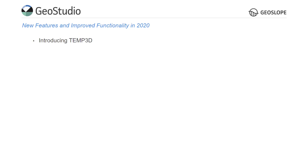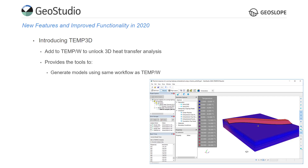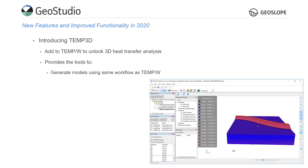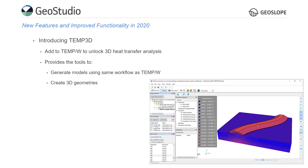3D temperature modeling is now available in GeoStudio. Add Temp3D to your existing TempW license to unlock the power of 3D heat transfer analysis. Temp3D provides the tools to set up models using the same workflow as TempW analyses, and quickly create 3D geometries as it comes with basic 3D model construction tools.